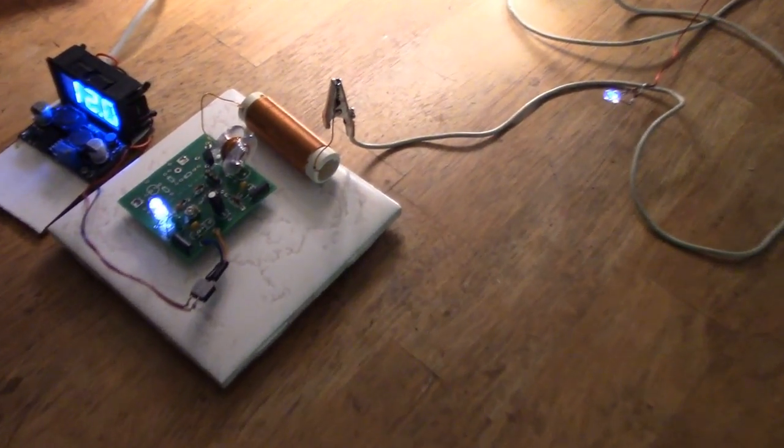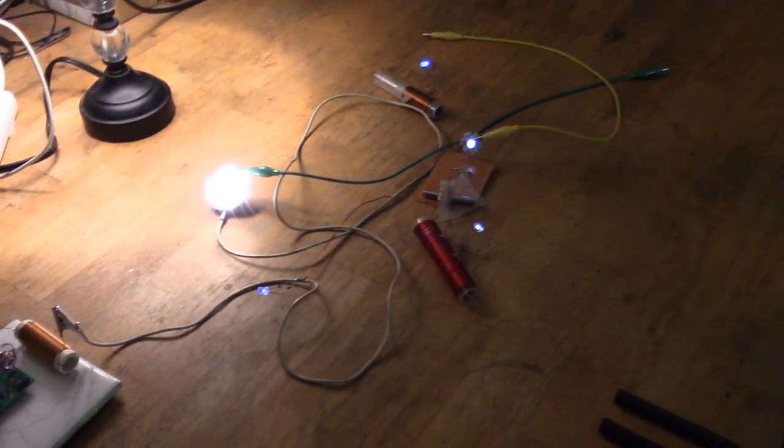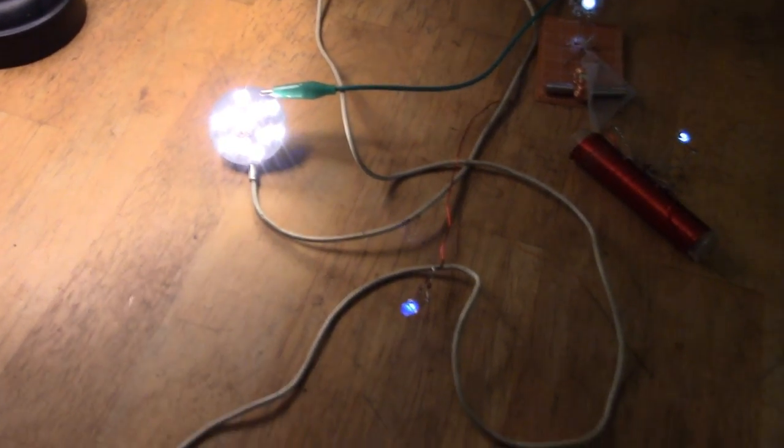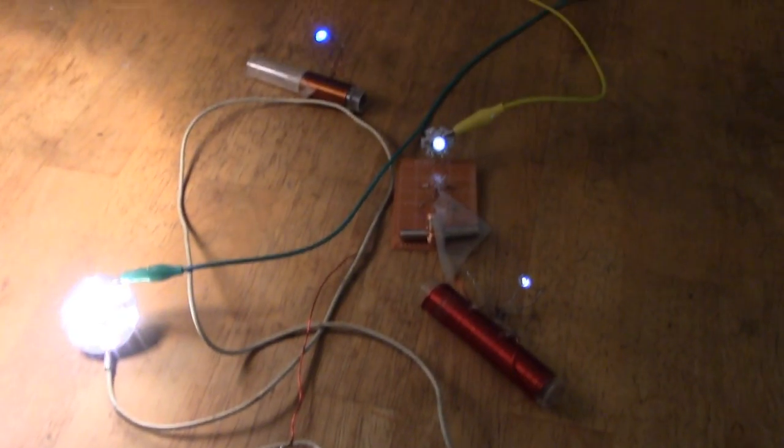You can also attach a clip lead to the large L3 coil, and then you can run lots of things just by putting them near to it. This LED is on really very nicely indeed, that's the Dollar Tree 8 watt, and then things have just spread around all over the place.